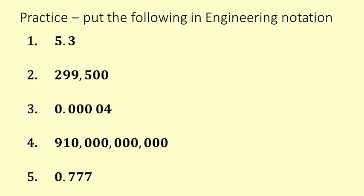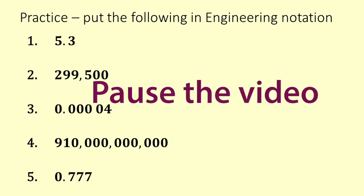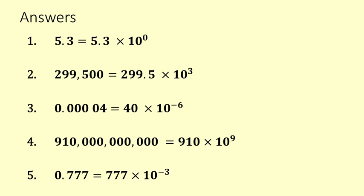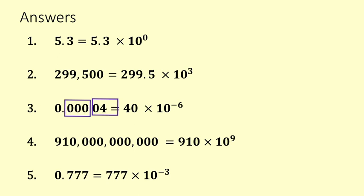Finally, we have a slide with five numbers to put into engineering notation — pause, give it a try, then we'll go through them. Here are the answers: 5.3 is 5.3 times 10 to the 0, and any number to the power of 0 is 1. 299,500 is 299.5 times 10 to the 3 — just one block of 3 moved. Then we have 40 times 10 to the negative 6, because we need to complete that full block of 3.